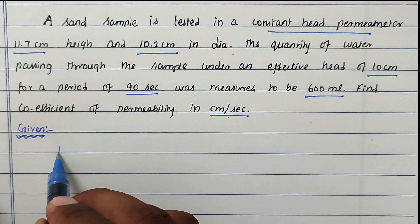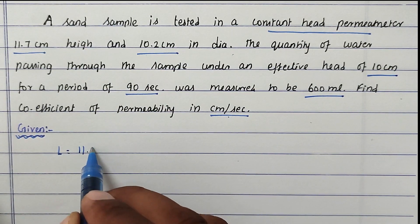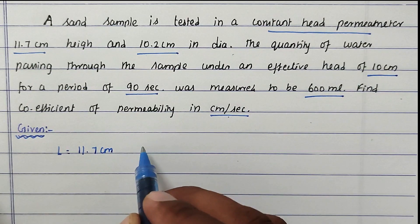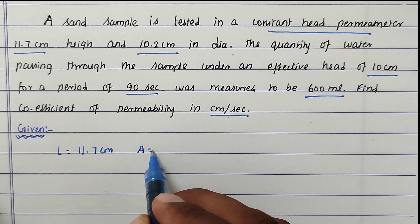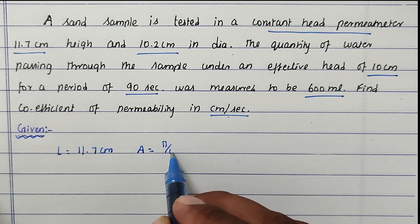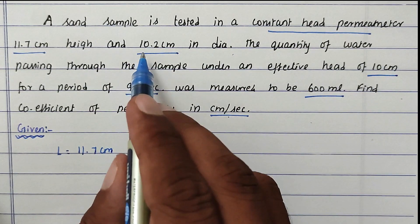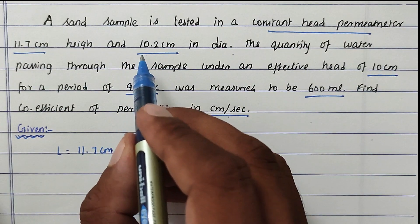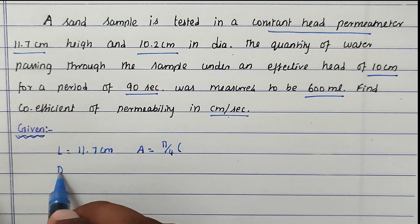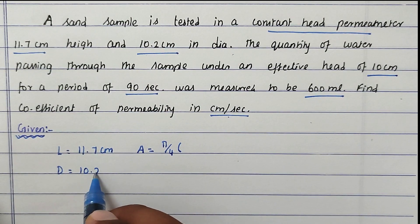The given values are: length of sample is 11.7 cm. Then we can find out the area, A = π/4 × d². We have the diameter, which is also given as 10.2 cm.